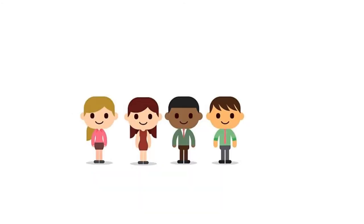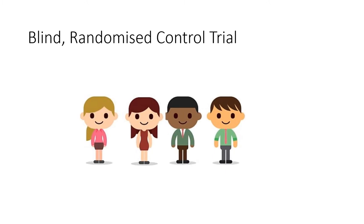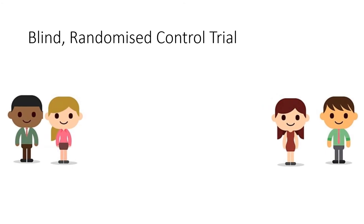In modern-day time we use something called a blind randomized control trial as the gold standard. I'm going to explain the components of this now with the following diagram. It is a randomized trial because all of the participants are randomly grouped into both a drug and a control trial. This is not controlled by the experimenters in order to avoid bias.